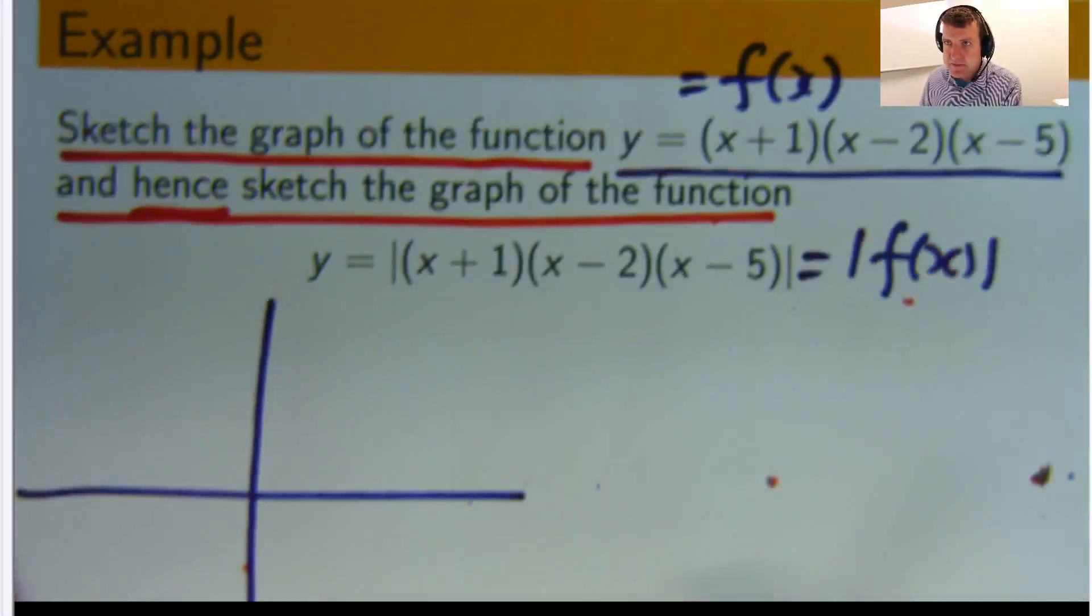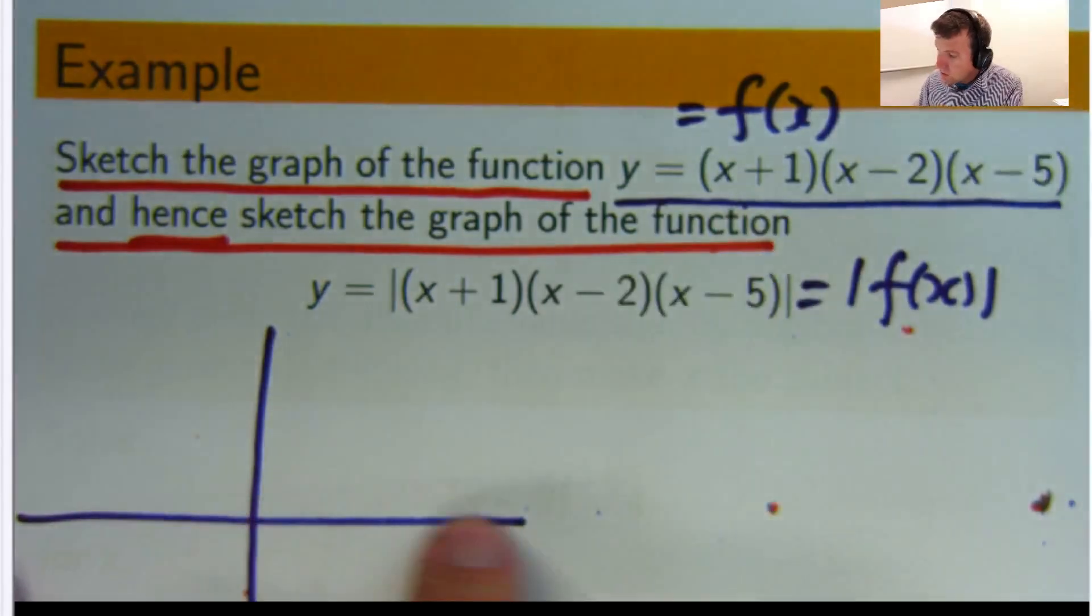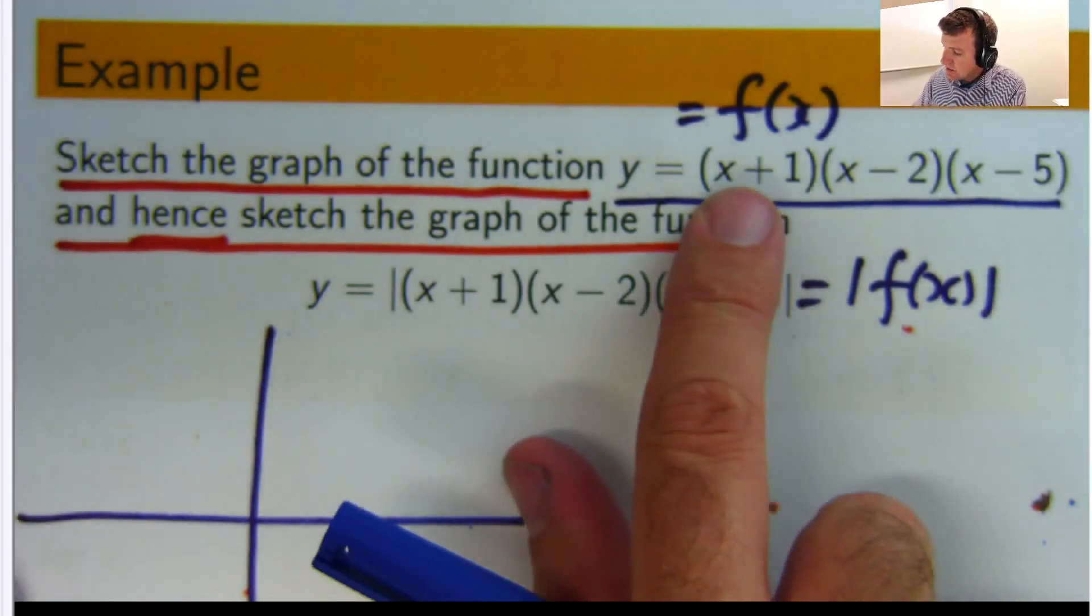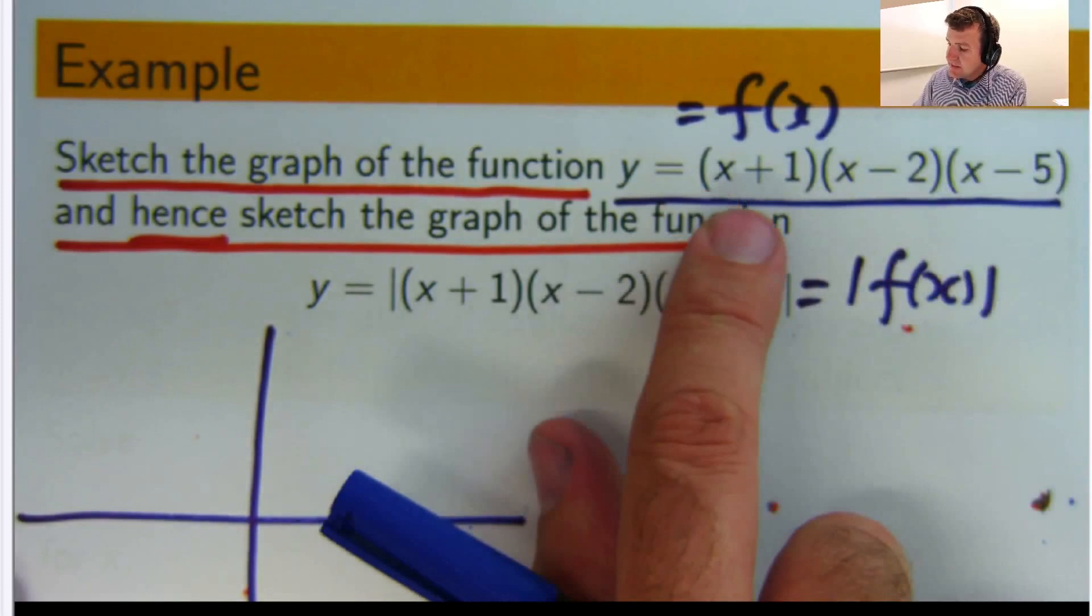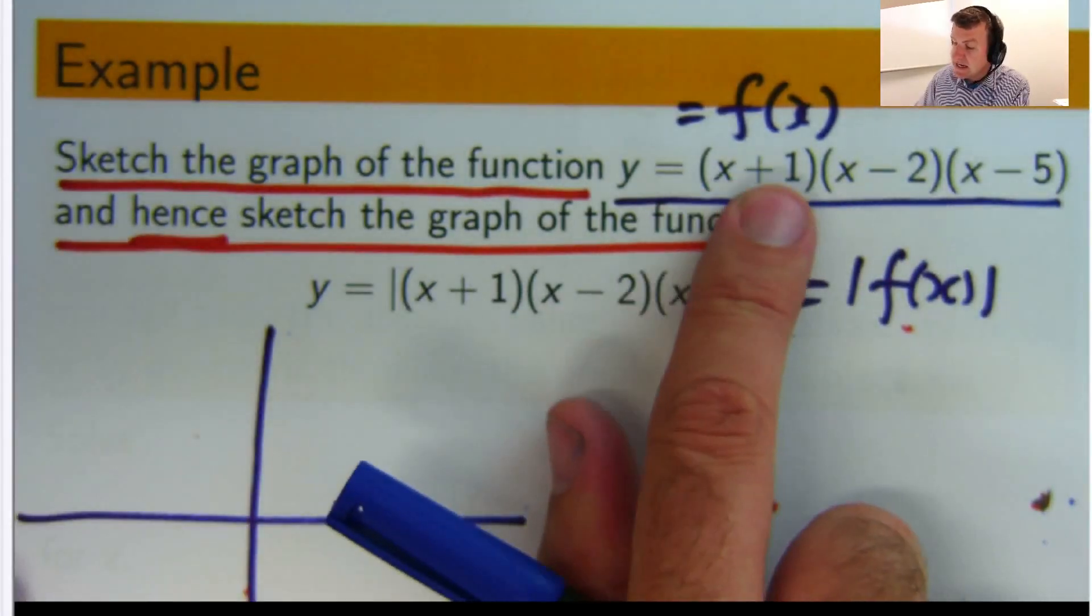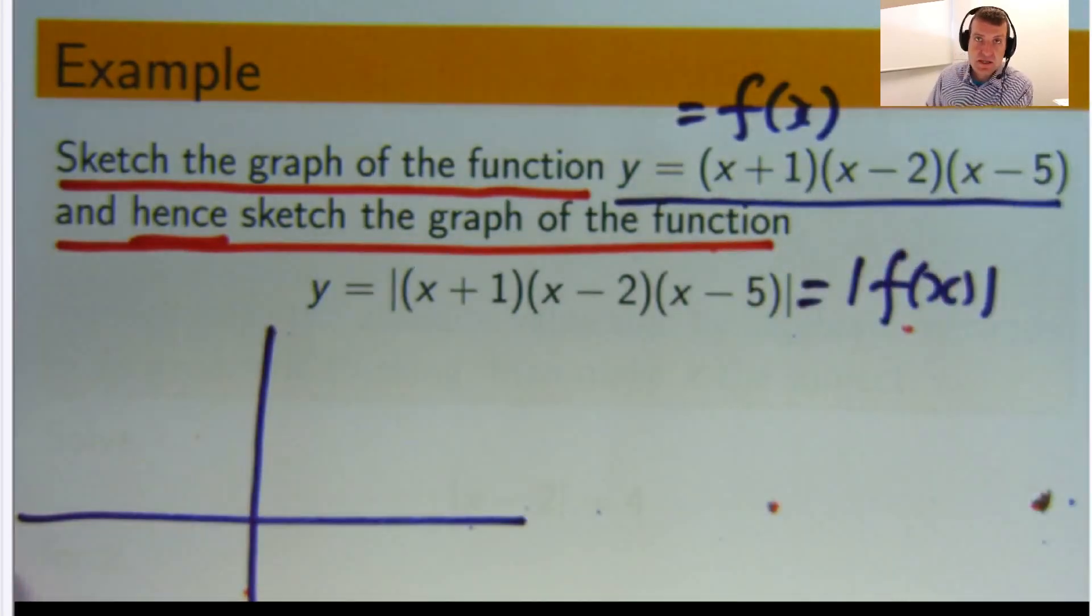Alright. Now from this nice factored form we know where the curve cuts the x axis, the x intercepts. Right? It'll cut when this is 0, when this is 0 and when this is 0. So the points where the graph cuts the x axis are negative 1, positive 2 and positive 5.